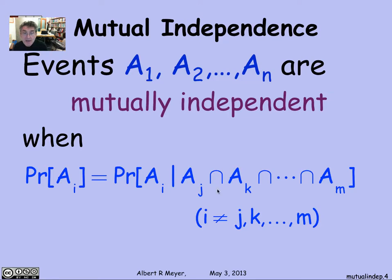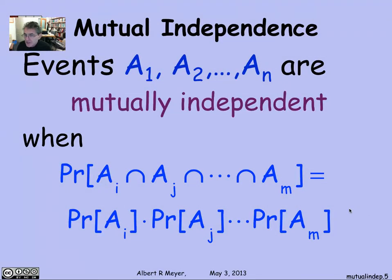So take A1, A2, or A1, A2, A3, and so on — and A5 is going to be independent of all of those other intersections. Shifting to the other definition of independence in terms of products: n sets are mutually independent when the probability of the intersection of any bunch of them is equal to the product of the individual probabilities of the events in the intersection.